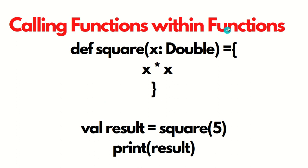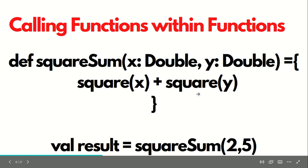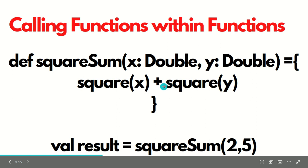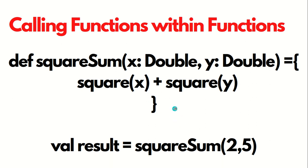Now, how can we call function within functions? Let's suppose we have a function called square, which computes the square of a number. It has a single parameter X, so it does X times X — the answer will be the square of the number. If you pass five, the answer will be 25. We also have another function called squareSum, which computes the sum of squares. squareSum is defined with DEF, and inside it calls the square function we defined. So we are calling a function within a function. If we pass two and five, the answer will be four plus 25, which is 29.